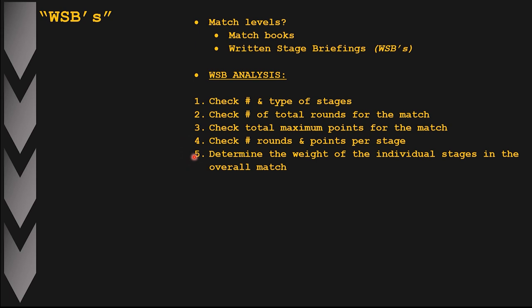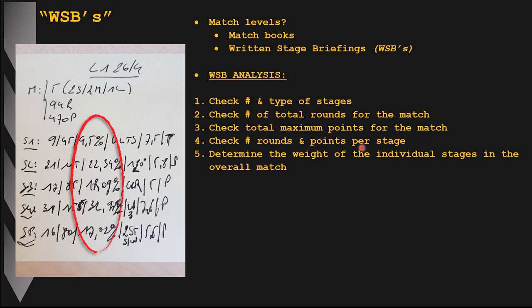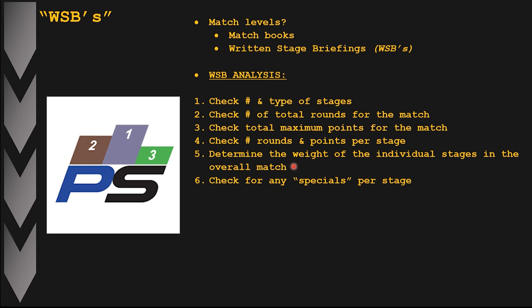Step five is where I calculate the weight of a particular stage in the overall match. I know the maximum points for the stage and the total points for the entire match. In general, a short course has much less weight than a medium or long course, which is interesting when developing stage strategy. I calculate the stage weight percentage as: points for the stage divided by the total points for the match, multiplied by 100.